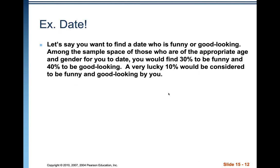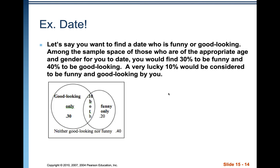Let's say you want to find a date who is funny or good-looking. Among the appropriate sample space, 30% are funny, 40% are good-looking, and a lucky 10% are both. Making a Venn diagram: you always start with the middle — the 10% who are both funny and good-looking go in the overlap.